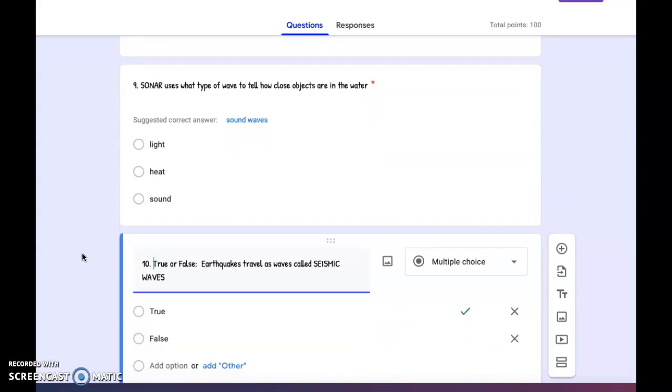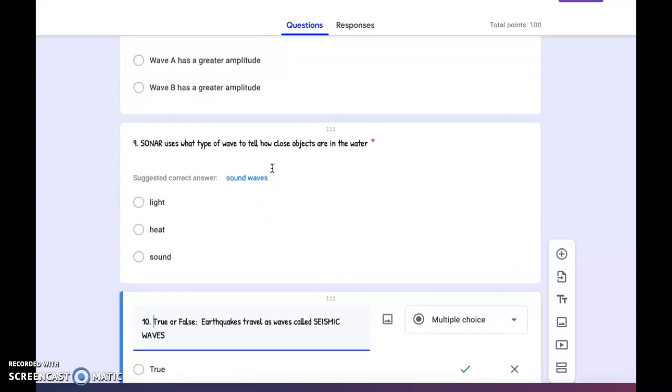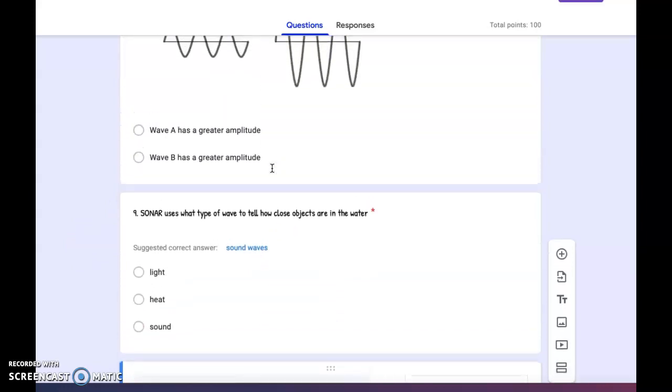Number nine: Sonar uses what type of wave to tell you how close objects are in the water? Light, heat, or sound?